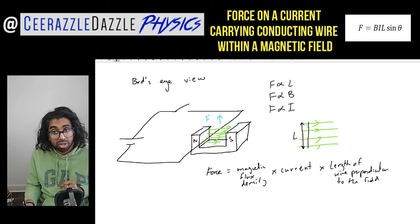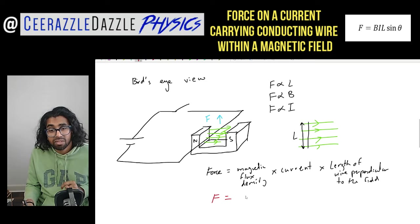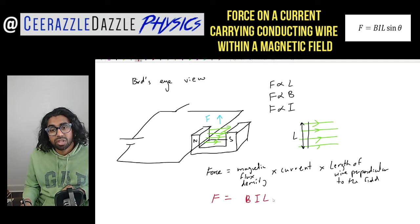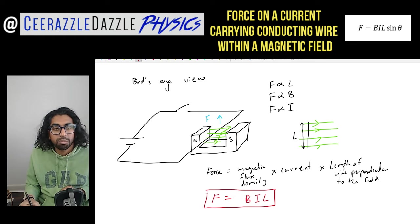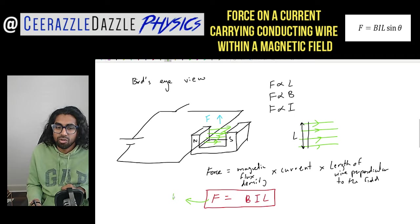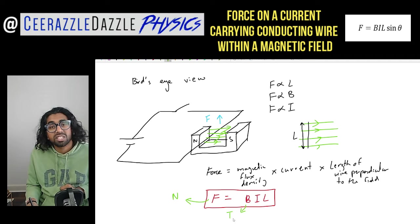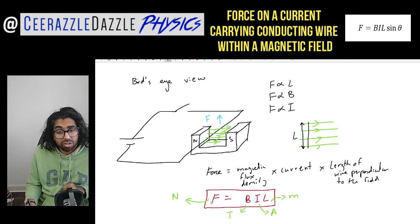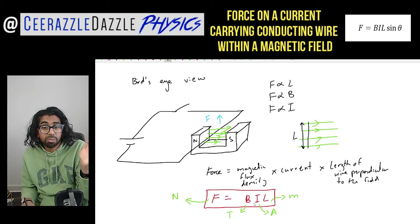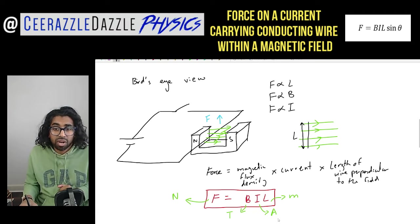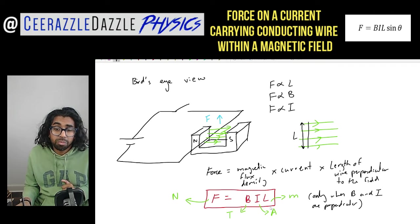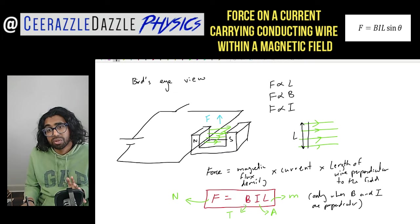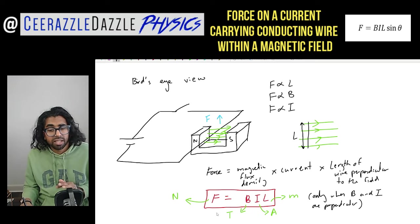We can combine these to get the formula: the force on the wire equals the magnetic flux density times the current times the length of the wire perpendicular to the field. So F = BIL — B for magnetic flux density, I for current, L for length. The units are: force in Newtons, magnetic flux density in Tesla, current in Amps, and length in meters. This formula only applies when the current in the wire is perpendicular to the field.